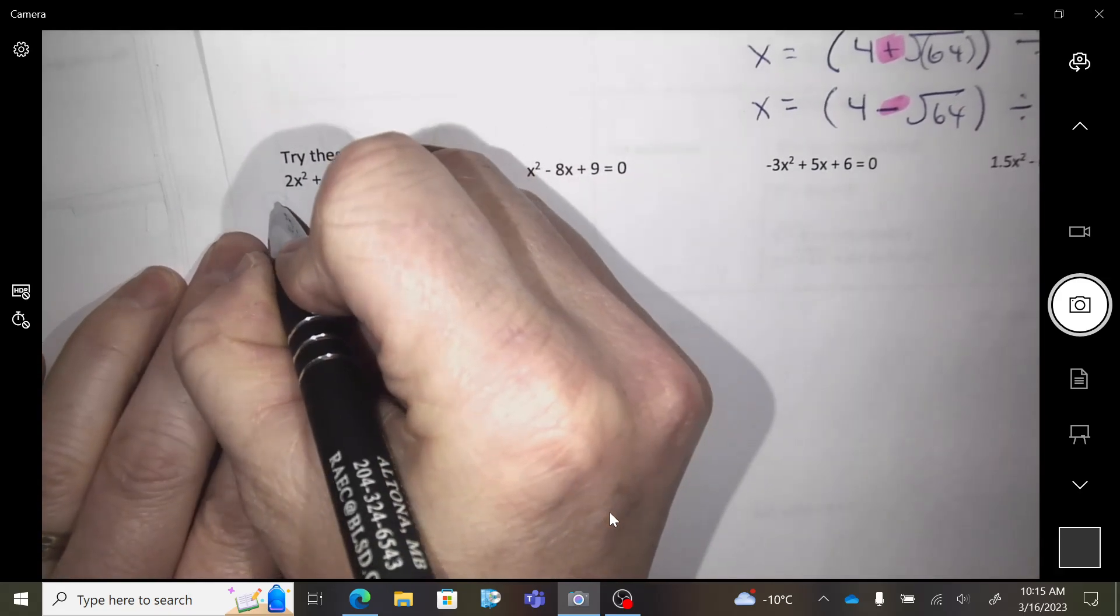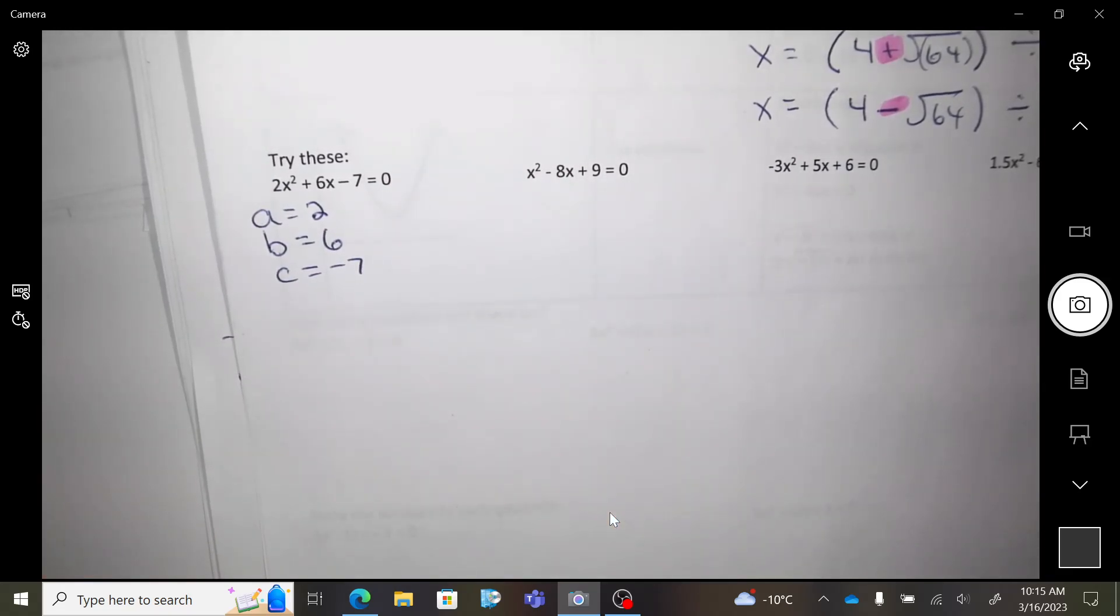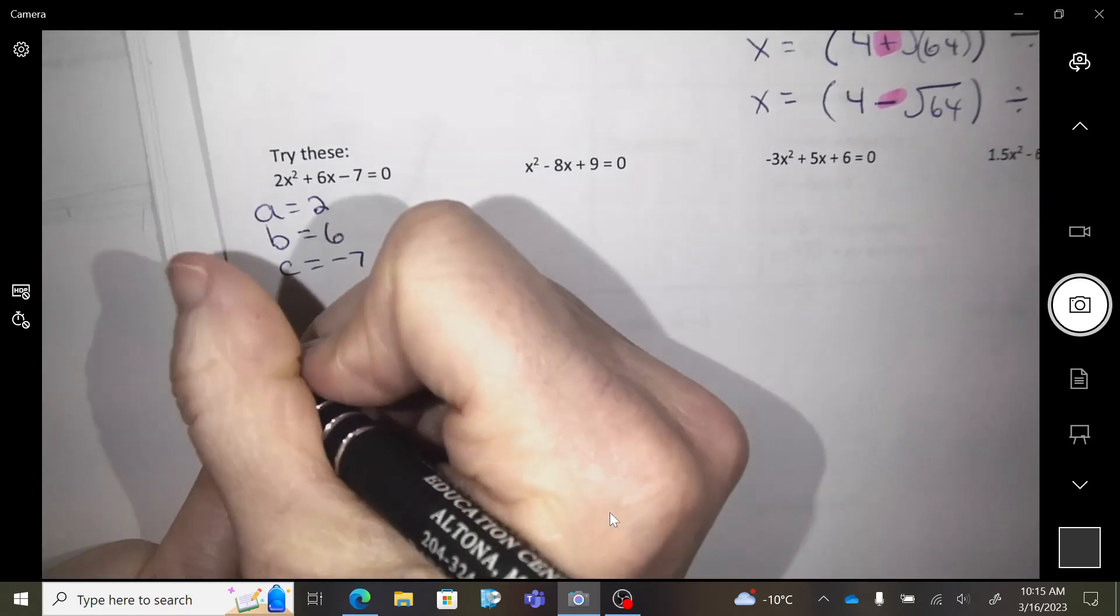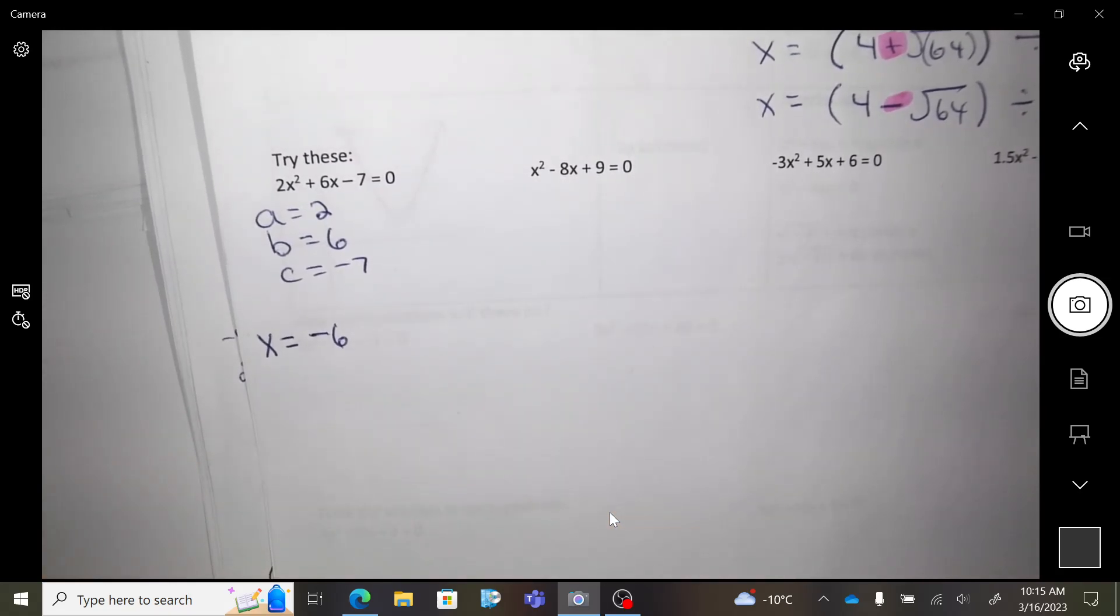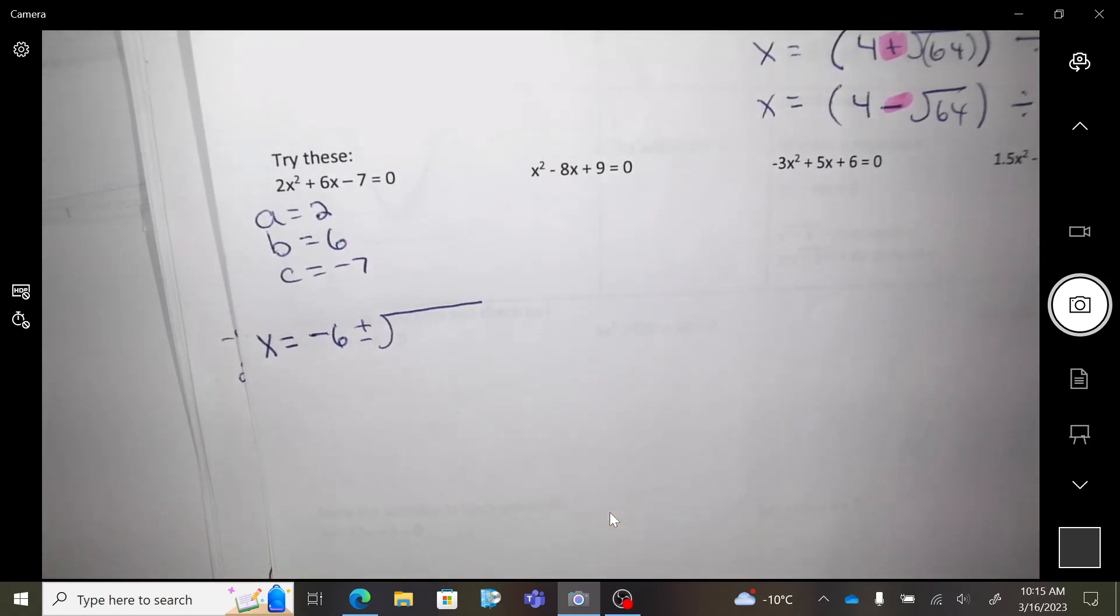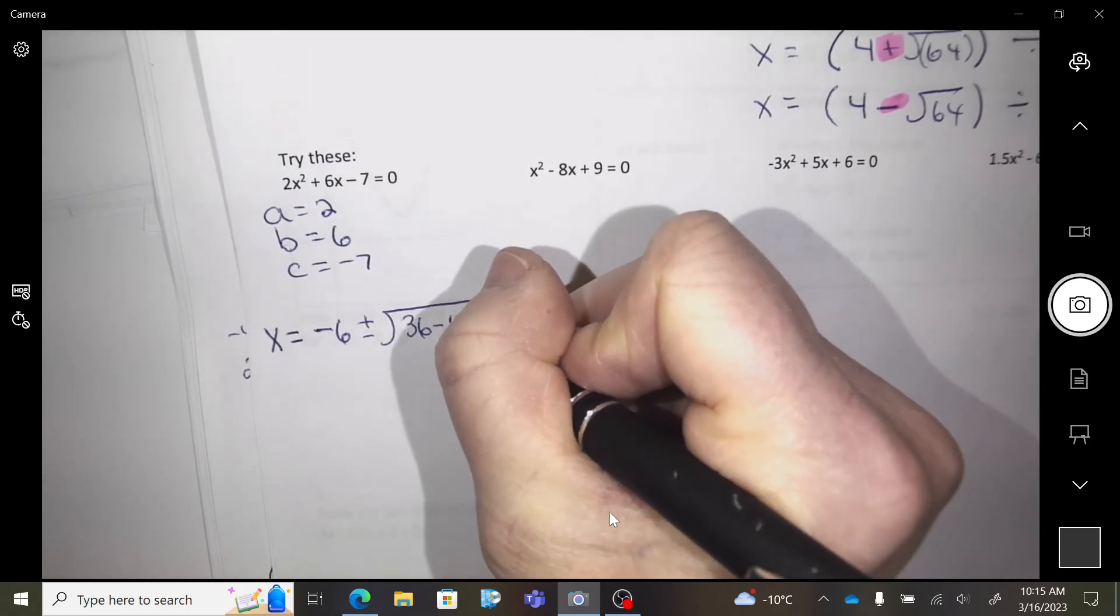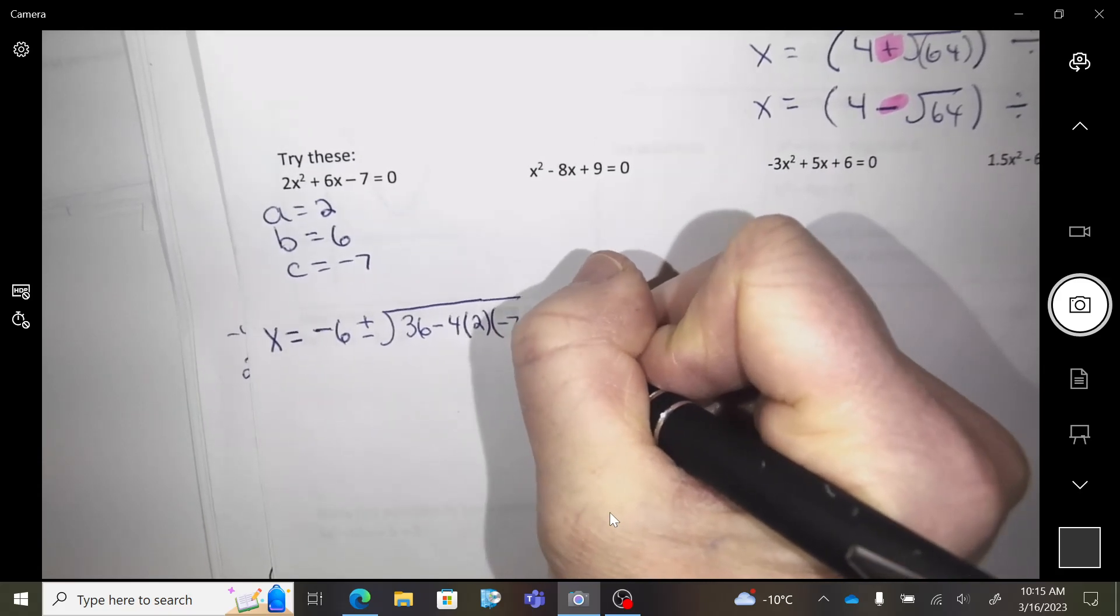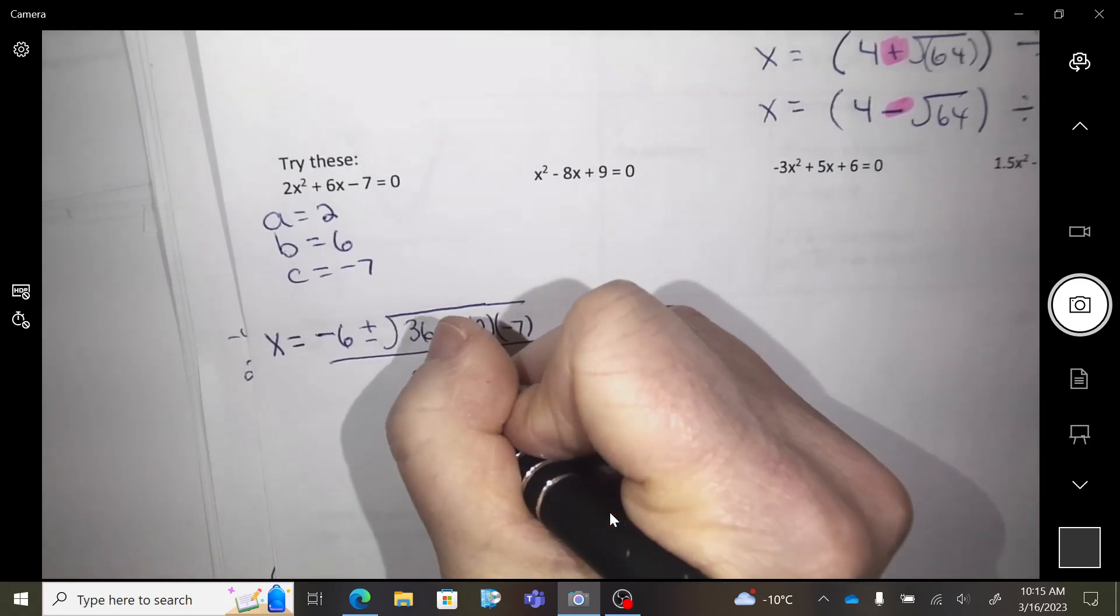Okay, so try these. So would it be helpful if we just said A was 2, B was 6, and C is negative 7? Is that going to be helpful if we just write that down first? X equals negative B, so negative 6, plus minus the square root of B squared, so please square it right now, so 36 minus 4 bracket 2 bracket negative 7 all over, so the whole thing is over 2 times 2.